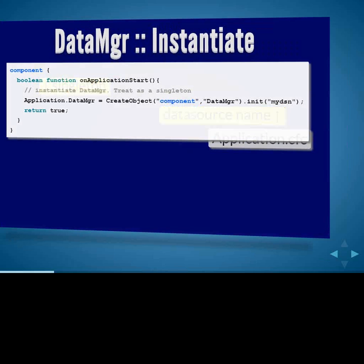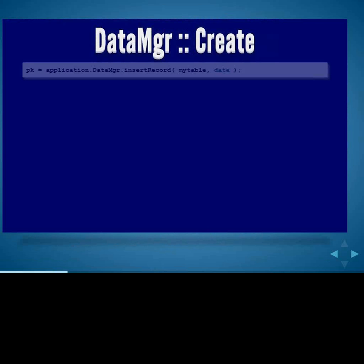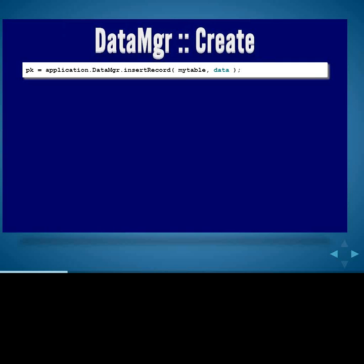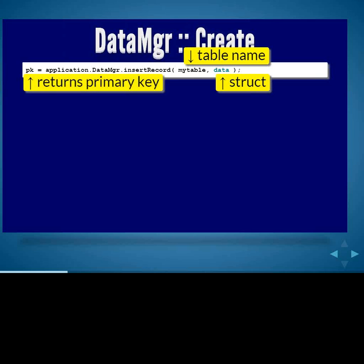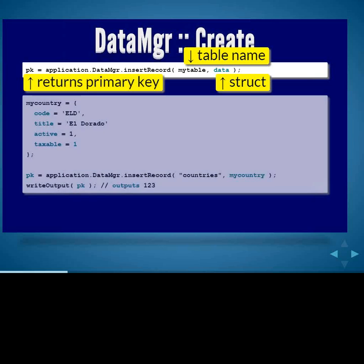The first part of CRUD is Create. There's a method called insertRecord — you pass in the table name and a struct of data, and it returns the primary key of the inserted record. Here I've got a countries table and I want to create a new country called El Dorado. I've created a struct called myCountry and I'm passing that straight into insertRecord as the second argument. Because Data Manager uses structs, you could actually pass in something as simple as your form struct — though you'd want to validate the data first. It will output the new primary key — for example, 1, 2, or 3.